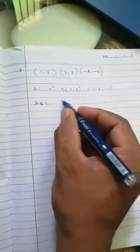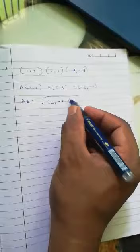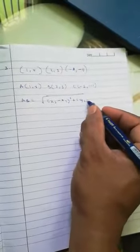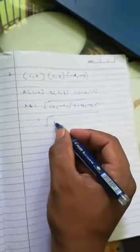Then you use the formula: (x2 minus x1) whole square plus (y2 minus y1) whole square. So if you take this as x1, y1, x2, y2, then x2 minus x1 whole square plus y2 minus y1 whole square.